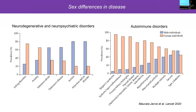It's important to study sex differences for many reasons, one of which is the prevalence of sex biases in disease. This slide illustrates some well-known diseases that have sex biases. On the left, you can see a variety of neurodegenerative and neuropsychiatric disorders, which are mainly male-biased — such as autism and attention deficit disorder — in contrast to autoimmune disorders that are more female-biased, such as lupus or multiple sclerosis.